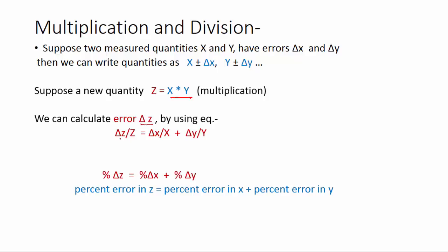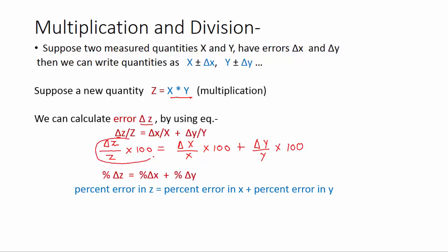Here delta z is the error in z, delta x is the error in x, and delta y is the error in y. We can also write this formula in a different way in terms of percentage error — we just multiply both sides by 100. So you can see this is the formula of percentage error. We can write this whole term as percentage error in z, this whole term as percentage error in x, and this whole term as percentage error in y.